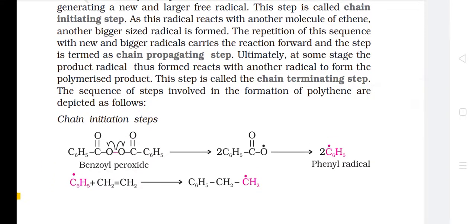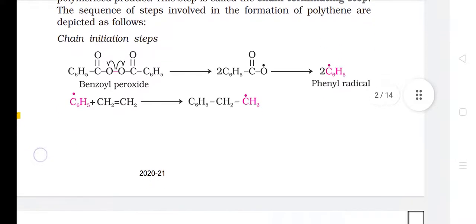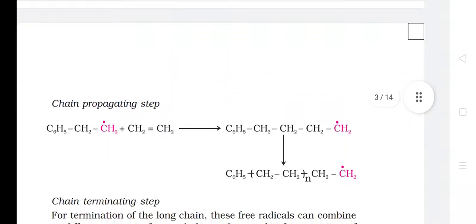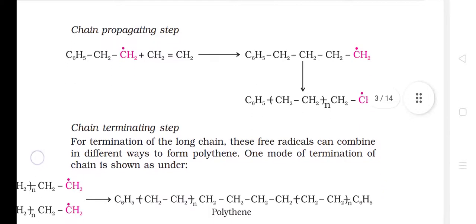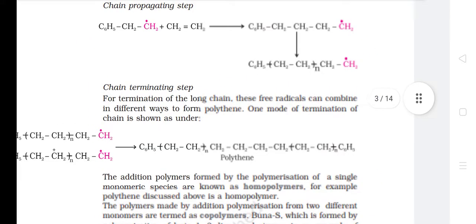Ultimately, at some stage, the product radical reacts with another radical to form the polymerized product — this step is called the chain terminating step. The sequence of steps involved in the formation of polyethene includes chain initiating, chain propagating, and chain terminating steps. Benzoyl peroxide gives the phenyl radical for initiation. For termination of the long chain, these free radicals can combine in different ways to form polyethene.